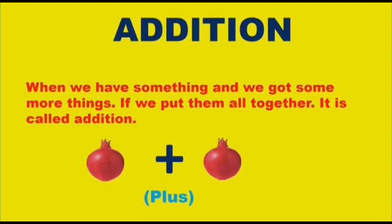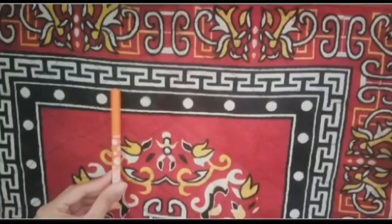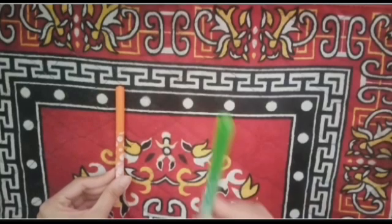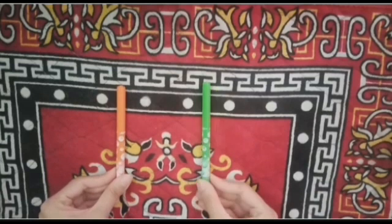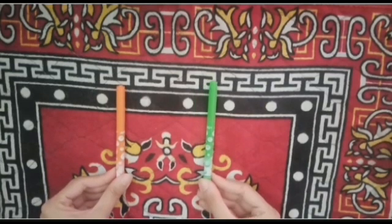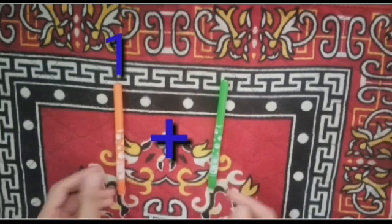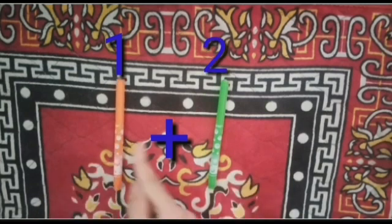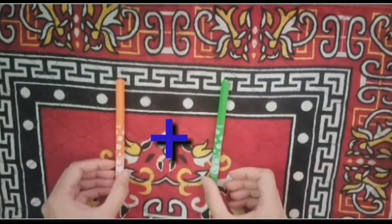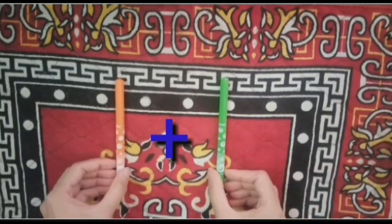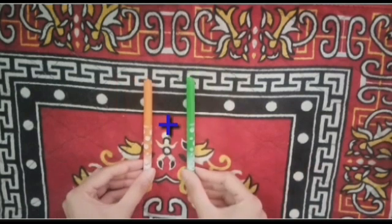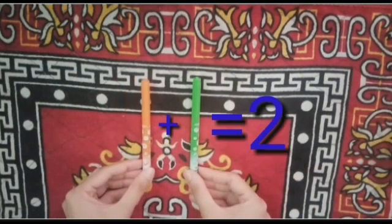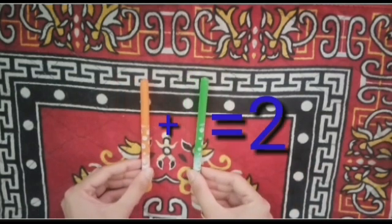I have one sketch pen and I got one more sketch pen. So how many sketch pens do I have in total? Let's count them. One, two. So all together I have two sketch pens. So what did we do? We add them.